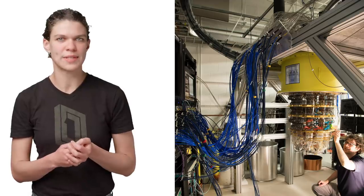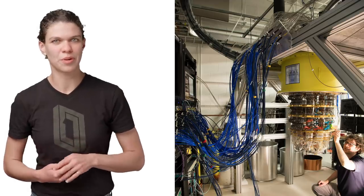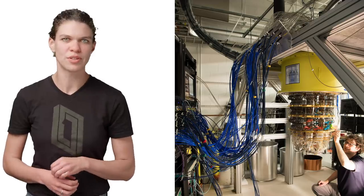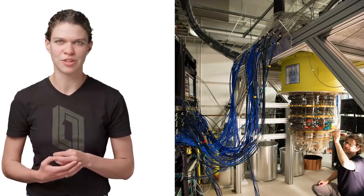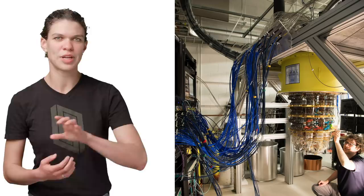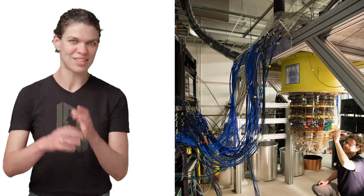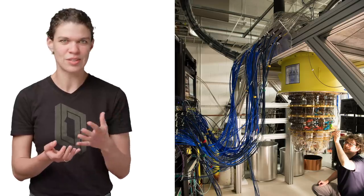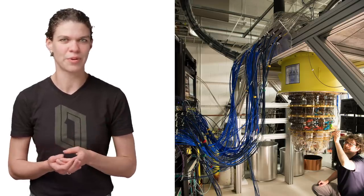The electronics outside the cryostat are controlled by code running on a computer. They generate precisely calibrated electrical signals, shaped pulses of microwave radiation, which are sent to control and read out the qubits. This entire system, from chip to cryostat, cables to code, is all necessary to run our quantum hardware.